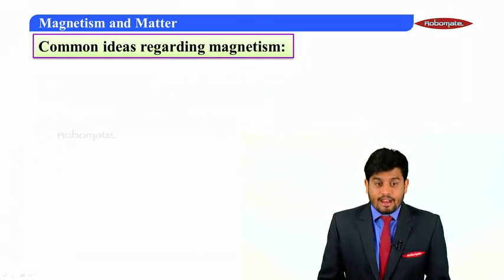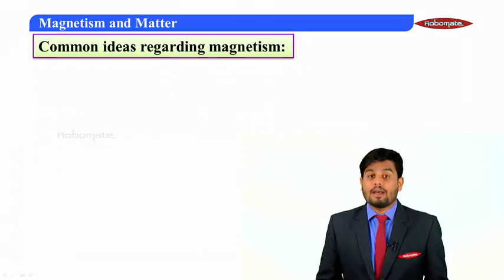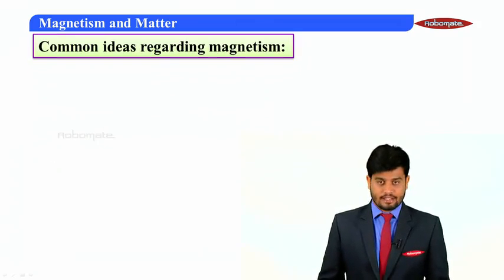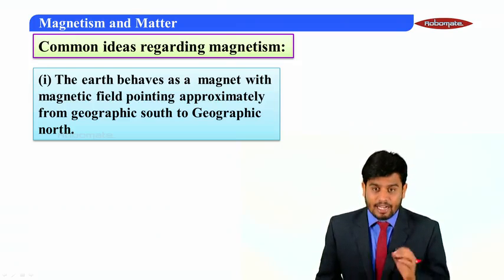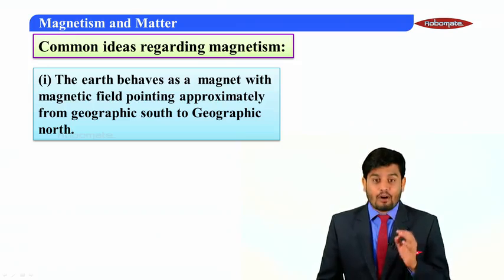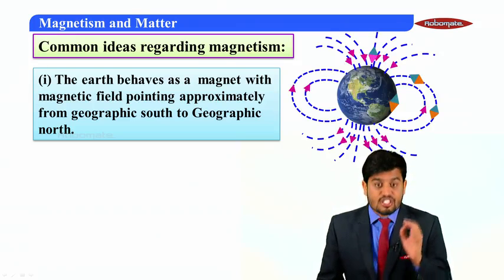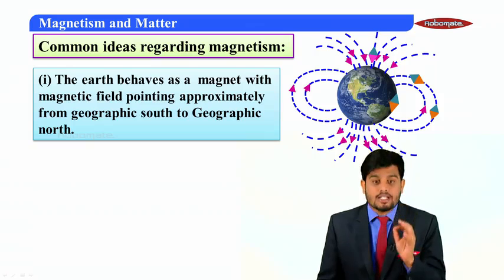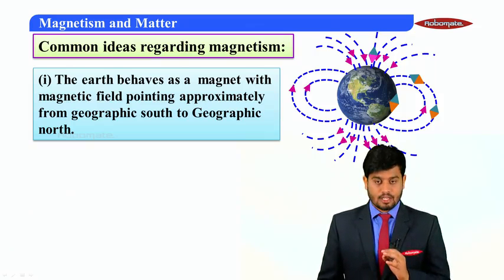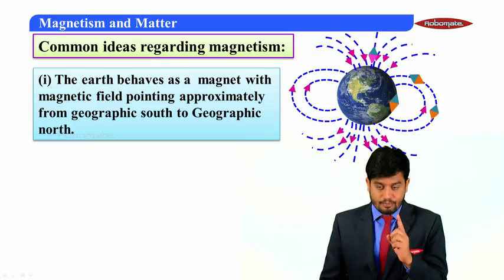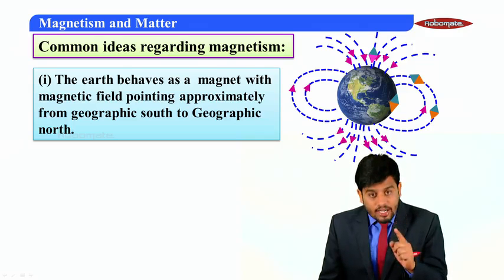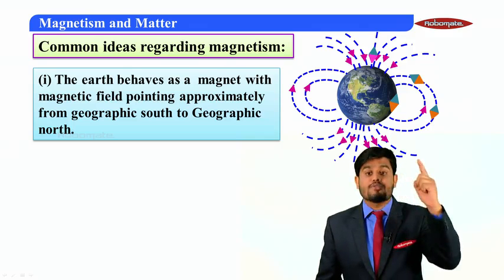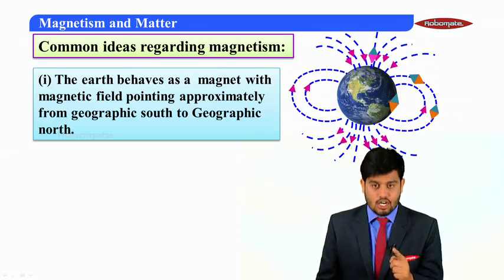Dear students, now we'll discuss the common ideas regarding magnetism. The first one is, the earth behaves as a magnet with the magnetic field pointing approximately from geographic south to the geographic north.